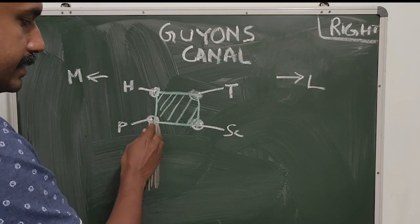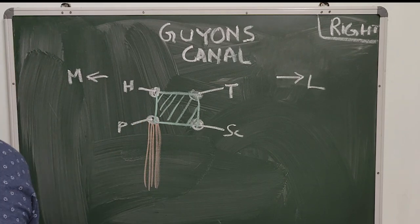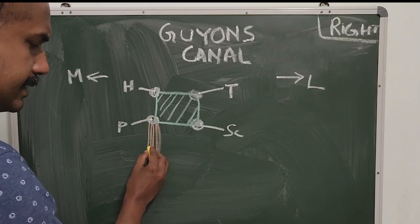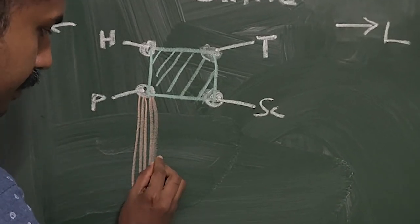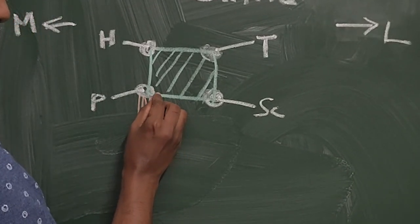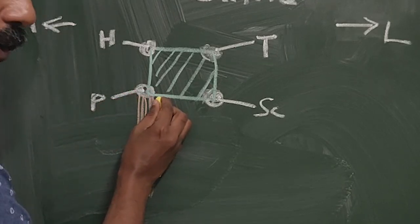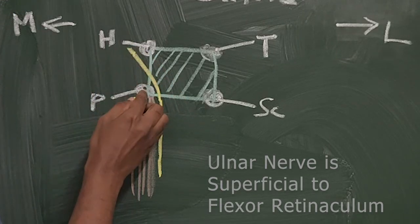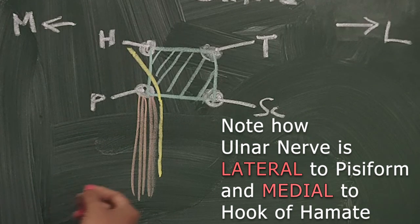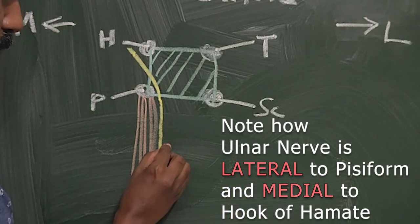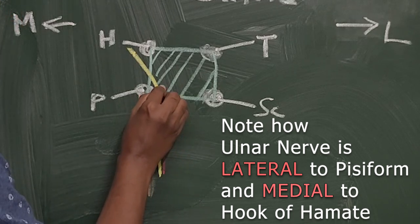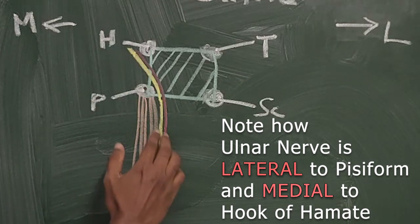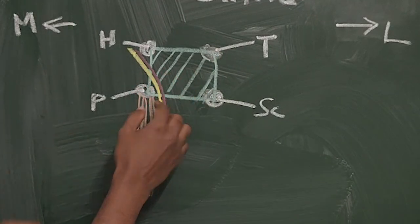Here you can see the FCU and the pisiform bone. The ulnar nerve is just lateral to the flexor carpi ulnaris tendon. Tracing the ulnar nerve, from here it lies just lateral to the pisiform, where it is superficial to the flexor retinaculum and drifts slightly medially. The ulnar artery accompanies it in the neurovascular bundle, running just lateral to the ulnar nerve, tracing almost the same pathway.